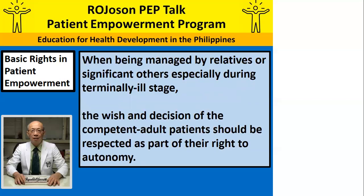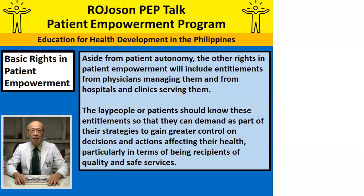When being managed by relatives or significant others, especially during the terminally ill stage, the wish and decision of the competent adult patients should be respected as part of the right to autonomy. Aside from patient autonomy, the other rights in patient empowerment will include entitlements from physicians managing them and from hospitals and clinics serving them. The lay people or patients should know these entitlements so that they can demand them as part of their strategies to gain greater control on decisions and actions affecting their health, particularly in terms of being recipients of quality and safe services.